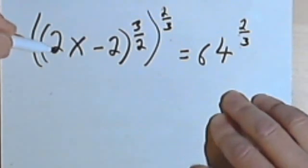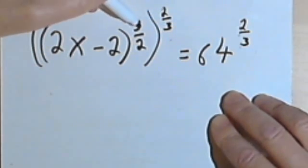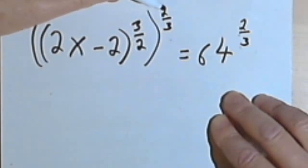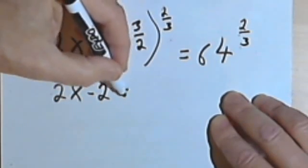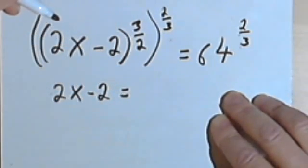Okay, so the left side, since the reciprocal, the 3 halves and the 2 thirds, will basically cancel each other, I'm going to end up with just 2x minus 2. The right side of the equation is 64 to the 2 thirds.